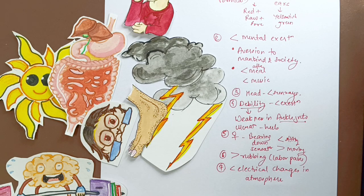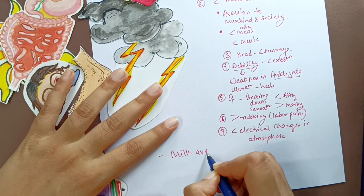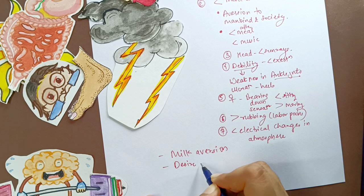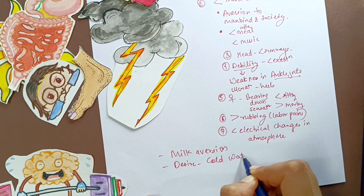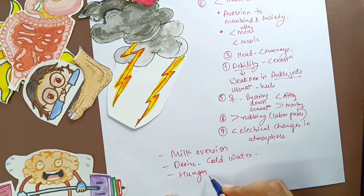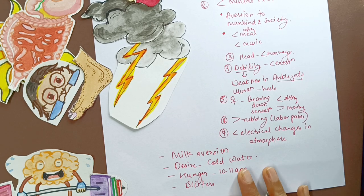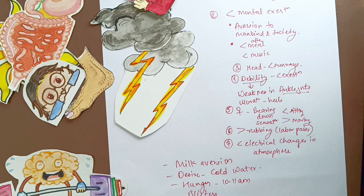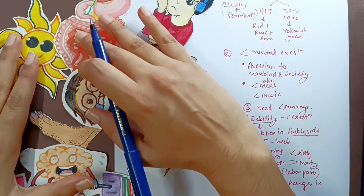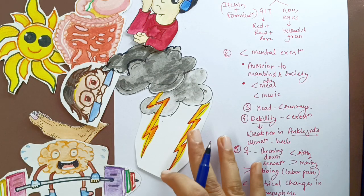The random additional points: milk causes aggravation with indigestion and diarrhea; craving for cold water but it aggravates; ravenous hunger especially from 10 to 11 a.m.; and blisters on the toes with cold feet. This is all about Natrium Carb from Dr. N.M. Chaudhary's Materia Medica, explained through characteristic points and diagrams.